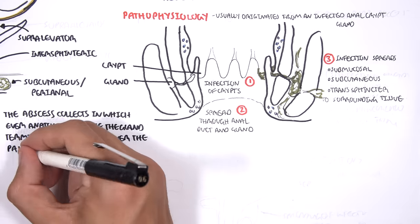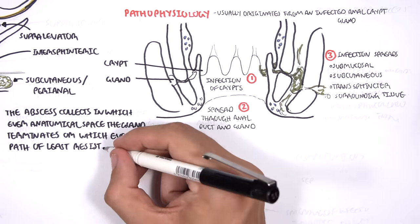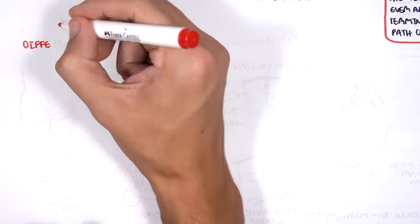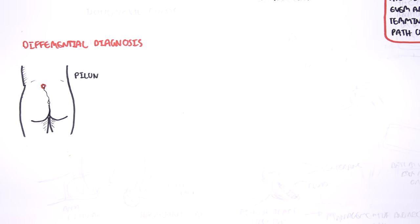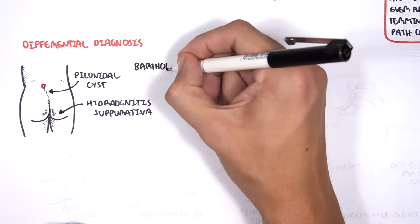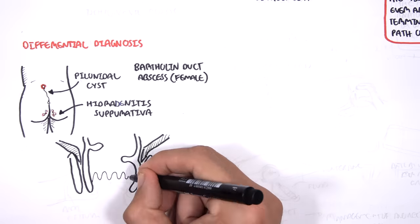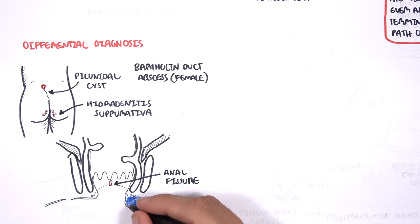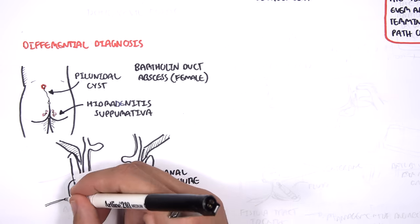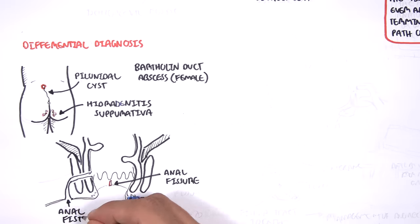The differential diagnosis for anorectal abscess include Pilonidal cysts, Hidradenitis suppurativa, Bartholin duct abscess in females, anal fissure, external hemorrhoids, and fistula in ano.